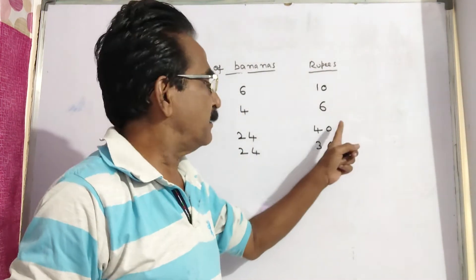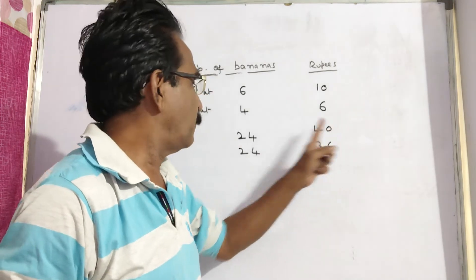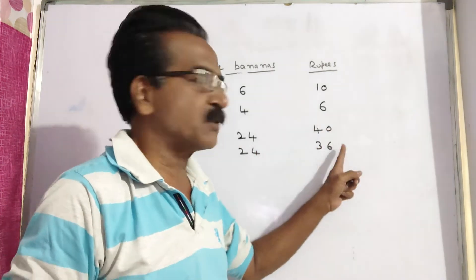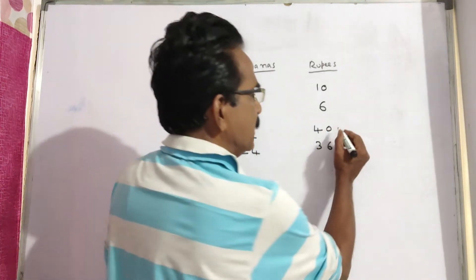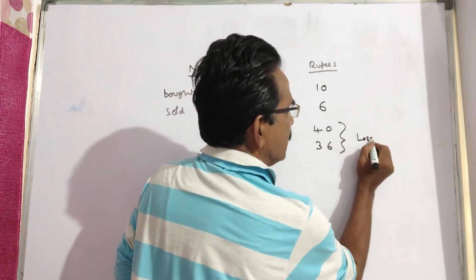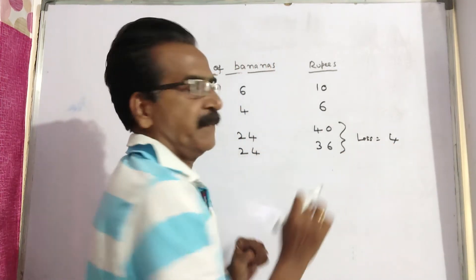So, 24 bananas are bought at 40 rupees and 24 bananas are sold at 36 rupees. So, here the loss is 4, 40 minus 36.